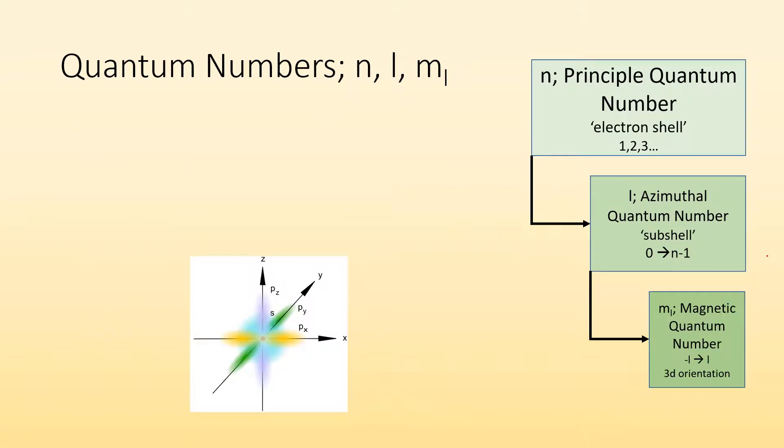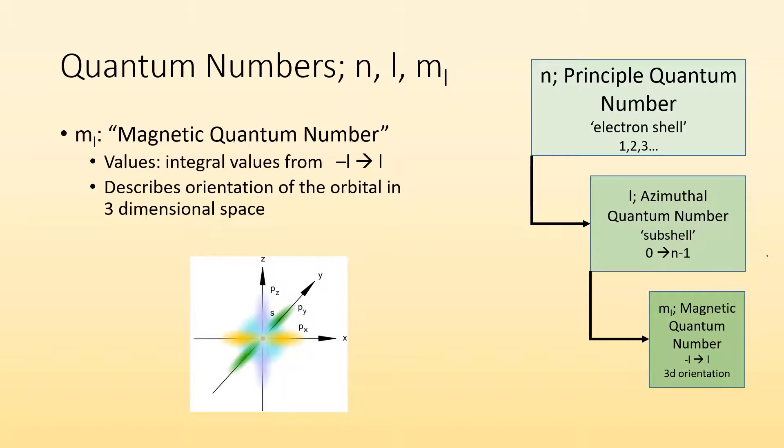And then the last one we're going to talk about right now is ML, or the magnetic quantum number. So these values can go anywhere from negative L to positive L. And they describe the orientation of orbitals in three-dimensional space. So if I had an orbital that's kind of shaped like a peanut, well, there's these two lobes. Are they on the X plane? Are they on the Y plane? Are they on the Z plane? How are they oriented in three-dimensional space? And that's what this third quantum number is going to tell you.